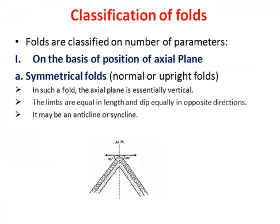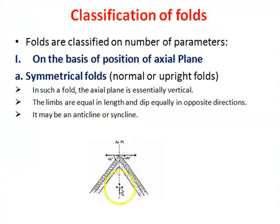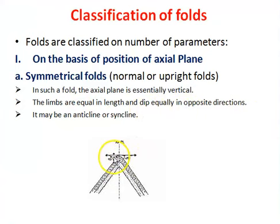Folds are classified on a number of parameters. The first parameter is based on the position of the axial plane. On this basis, folds are classified into two categories. First, symmetrical folds, also known as normal or upright folds — in such folds the axial plane is essentially vertical. As shown in the diagram, the axial plane is vertical and the limbs are equal in length, dipping equally in opposite directions, for example 45 degrees on each side. This type of fold may be anticline or syncline.